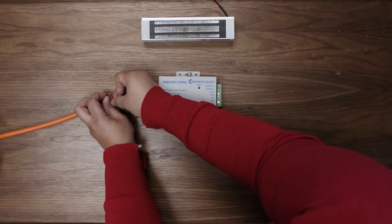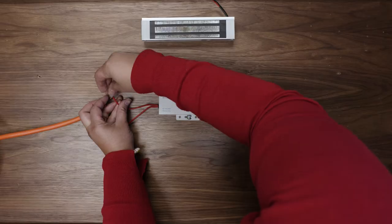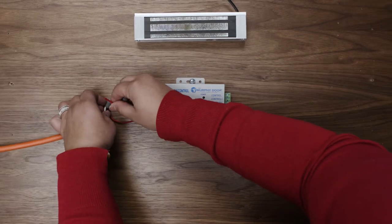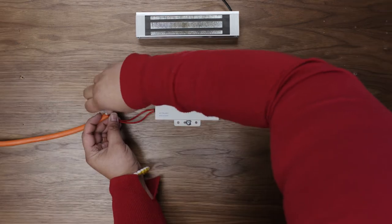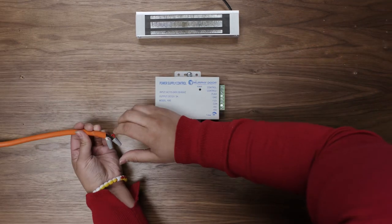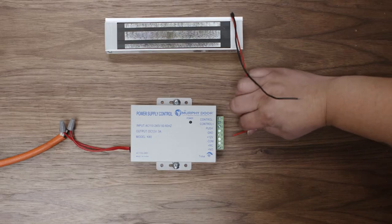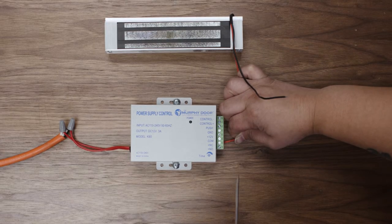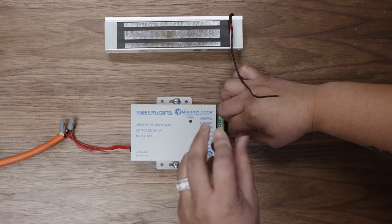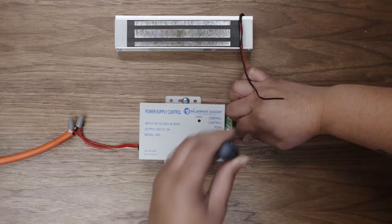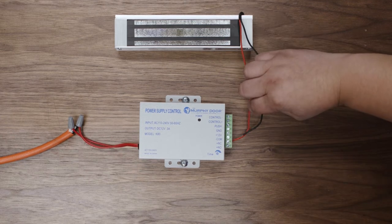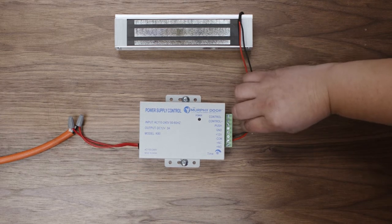Begin by connecting the power supply box to your power source. Connect the red wire from the magnet to the NC positive terminal on the power supply. Then connect the black wire from the magnet to the common terminal on the power supply.